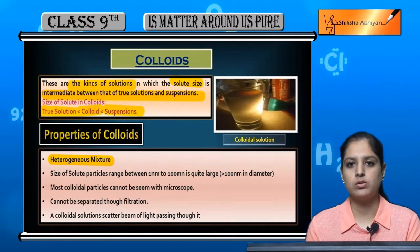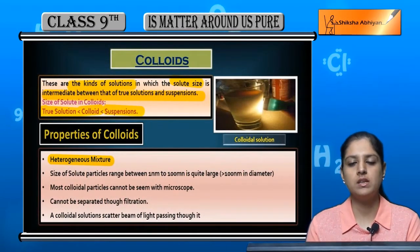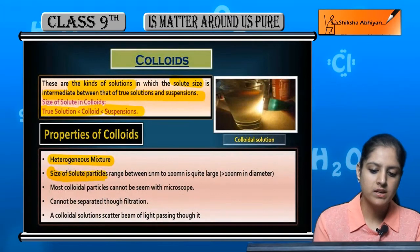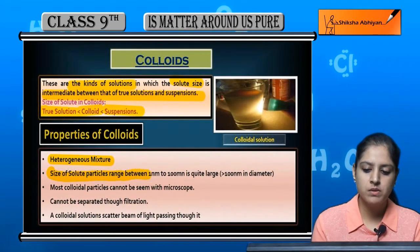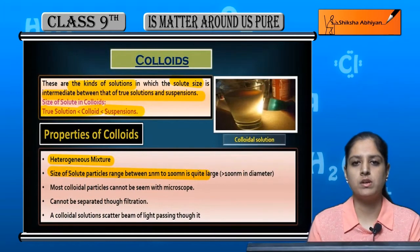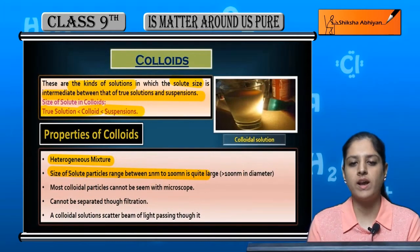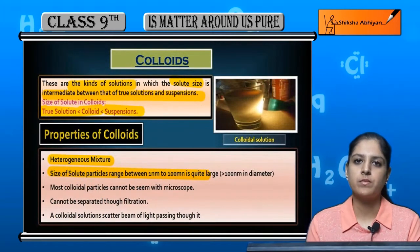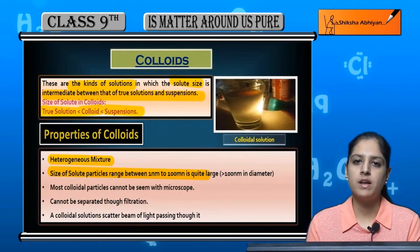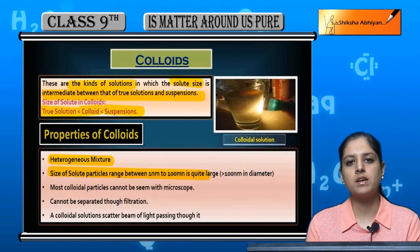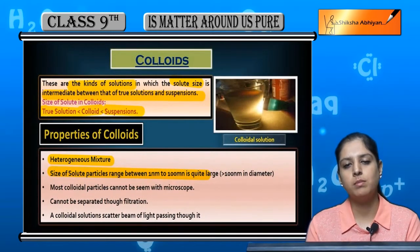Colloid particles remain insoluble in the solvent. The size of solute particles ranges between 1 nanometer to 100 nanometers, which is quite large. In a true solution, the solute particles are smaller than 1 nanometer, while in a suspension, the particles are larger than 100 nanometers.